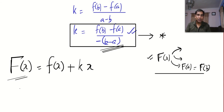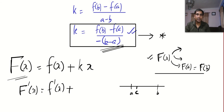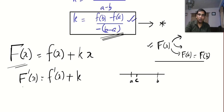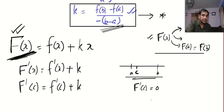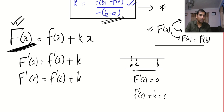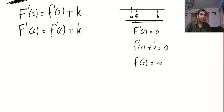According to Rolle's theorem applied to capital F(x), there exists at least one point c between a and b where the derivative is zero. The derivative F'(x) = f'(x) + k, so F'(c) = f'(c) + k = 0. Therefore f'(c) = −k. Substituting the value of k, we get f'(c) = f(b) − f(a) / (b − a), which is Lagrange's theorem. Take any textbook and go through the proof once or twice and practice.